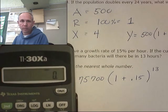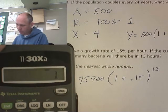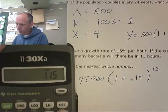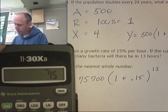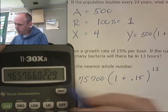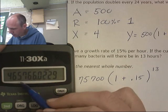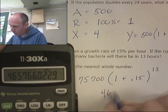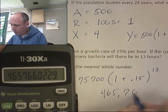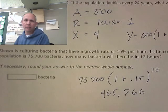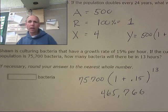This is where the calculator really earns its keep. 1 plus .15 raised to the 13th power times 75,700. Round it to the nearest whole number. What's that? 465,766 bacteria. Alright. Thanks. Bye.